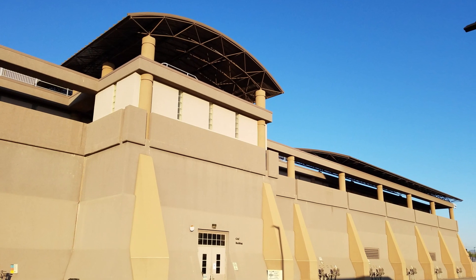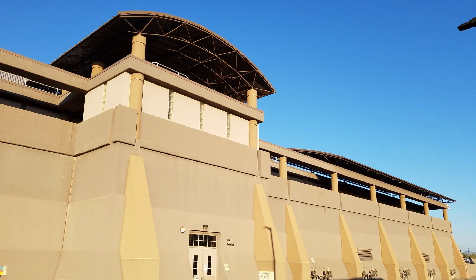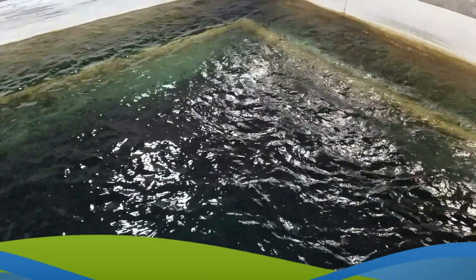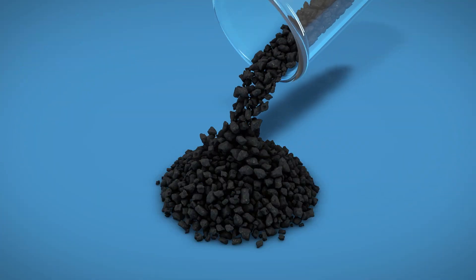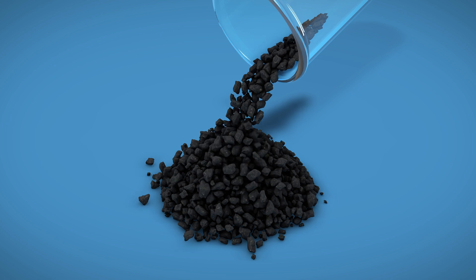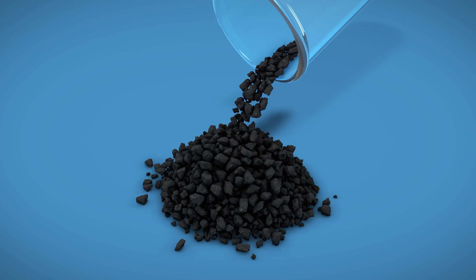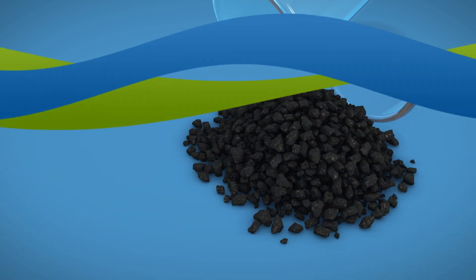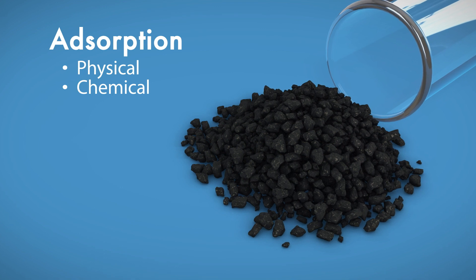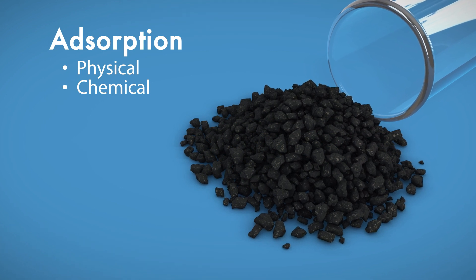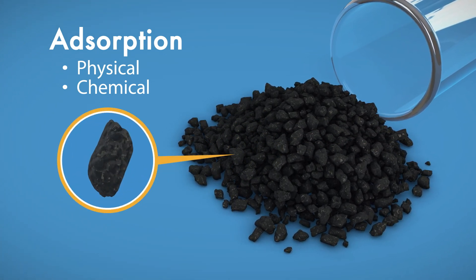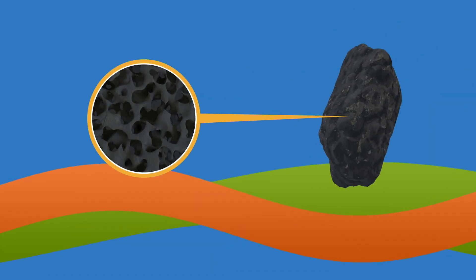The filtered water from all three plants is conveyed to a granular activated carbon treatment system. Granular activated carbon, or GAC, is used to absorb natural organic compounds and improve taste and odor. Adsorption is both a physical and a chemical process where molecules accumulate on a surface — in this case, on the surface of the GAC.